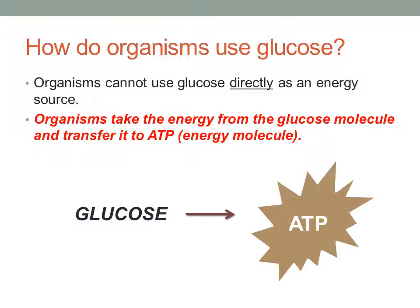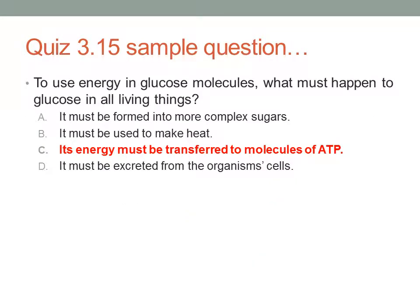So in the previous slide, we saw that organisms have to take the energy from the glucose molecule and transfer it to ATP. So we're taking energy from glucose, turning it into ATP, and then we use the energy in ATP to fuel a lot of the things that go on in our body. So the best answer for this one would be C: its energy must be transferred to molecules of ATP.